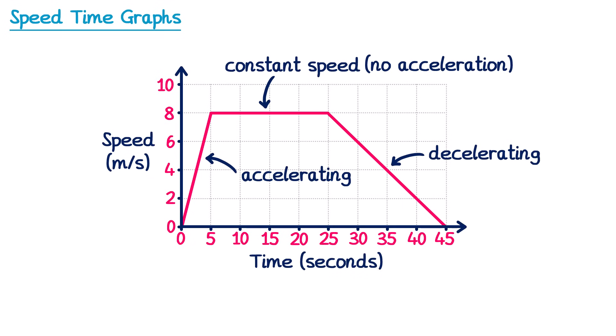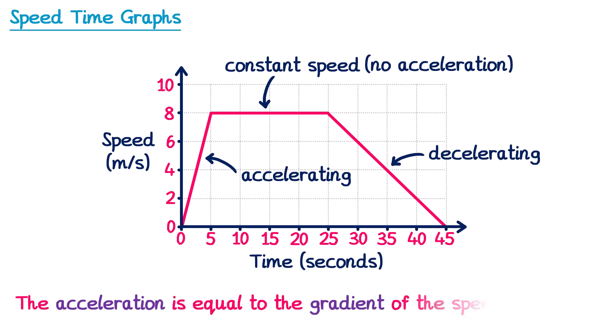We're able to work out the numerical value of the acceleration at each stage in this race, because the acceleration is equal to the gradient of the speed-time graph. So if we want to work out the acceleration of any particular part, we just need to work out its gradient.